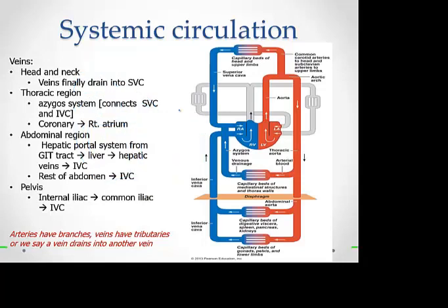In the pelvis, there is a vein called the internal iliac vein, which drains into the common iliac, and then into the inferior vena cava. This is how the venous system is arranged in systemic circulation.